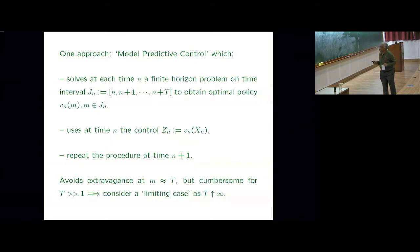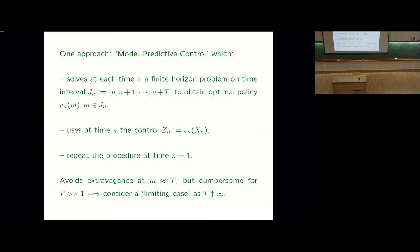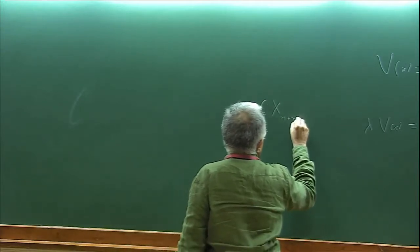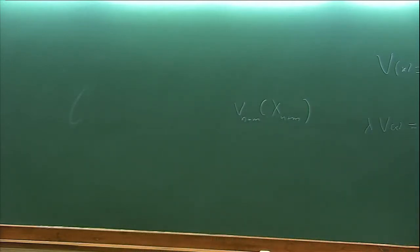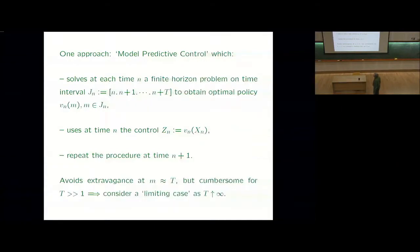I'm at time n and for the time interval of length t, I solve the control problem. It will give me control at each time. At time m it will give me some control, a function of the current state. You get a policy. The problem itself depends on n because the interval depends on n. At time n plus m I shall use some control which is a function of the current state x_n+m. This function will also depend on n and m. But you don't use those controls from n to n plus t. What you do is just the first one you use. At time n you use this. When you move to n plus 1, you solve the problem again from n plus 1 to n plus t plus 1.